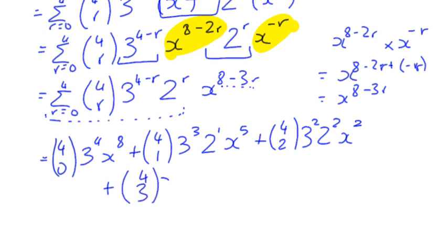And then we've got 4 choose 3. R is 3, so it becomes 3 to the power of 1 times 2 to the power of 3. And my R is 3, 8 minus 9 is negative 1. And then I've got 4 choose 4. R is 4, so 4 minus 4 is 0. So 3 to the power of 0 is just 1. I've got 2 to the power of 4, and I've got X to the power of 8 minus 12 is negative 4.